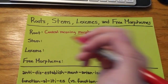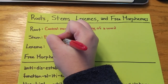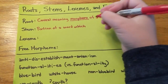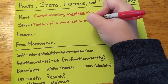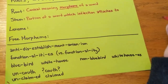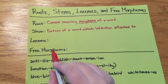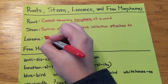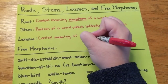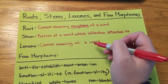A stem is the portion of a word which inflection attaches to. This is after we've done derivational morphology to create a word with meaning, and we then attach an inflection to it. A lexeme is the central meaning of a word, a lot like a root, but a root has to be a single morpheme, whereas a lexeme can be multiple morphemes. Once we do the examples, this will make more sense.